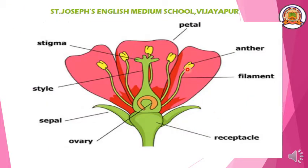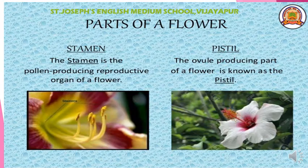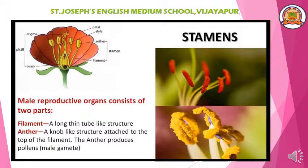Here you can see stigma, style, ovary, and ovule — all these are the female part of the flower. Whereas anther and filament are called the male part, that is the stamen. Stigma, style, ovary, and ovule together form the pistil, which means the female part of the flower.